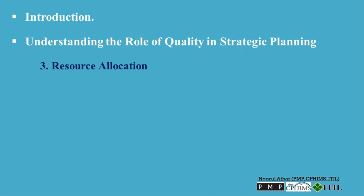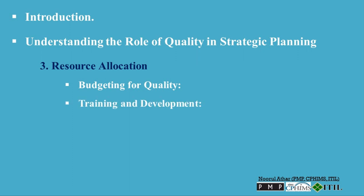3. Resource allocation — Budgeting for quality: Advocate for the allocation of sufficient resources, including funding, personnel, and technology, to support quality initiatives. Ensuring these resources are included in the strategic plan is crucial for the successful implementation of quality improvements. Training and development: Plan for ongoing education and training for staff to keep them updated on the latest quality standards and practices, which is essential for maintaining a high level of competence and adherence to quality protocols.